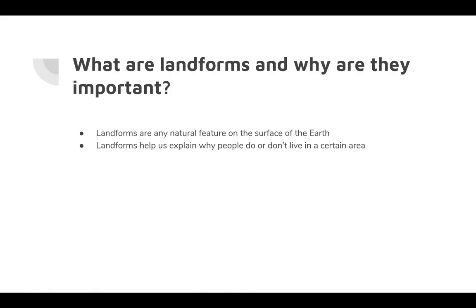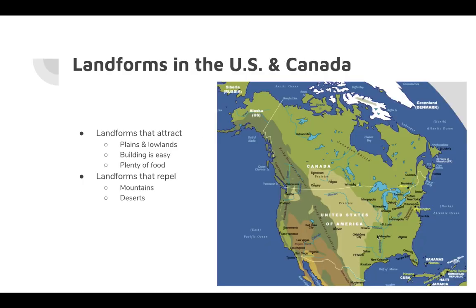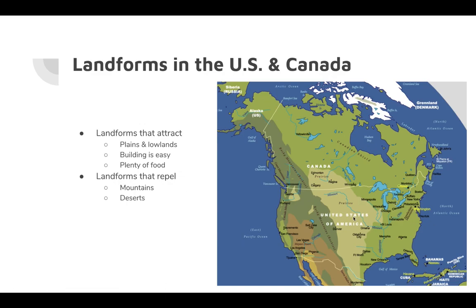Landforms are any natural feature on the surface of the earth — mountains, plateaus, basins, and so on. Landforms help explain why people do or don't live in a certain area. Some landforms attract people to those areas, while some keep people away. Landforms that attract people are plains and lowlands, where it's easy to build and there's plenty of food and water. Landforms that repel people are mountains and deserts because it's really difficult to build there.